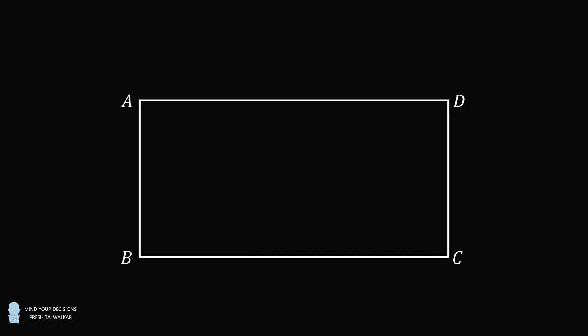Hey, this is Presh Talwalkar. ABCD is a rectangle with AB equal to 4 and BC equal to 8. Construct the arc AE centered at B, where point E is along the side BC.